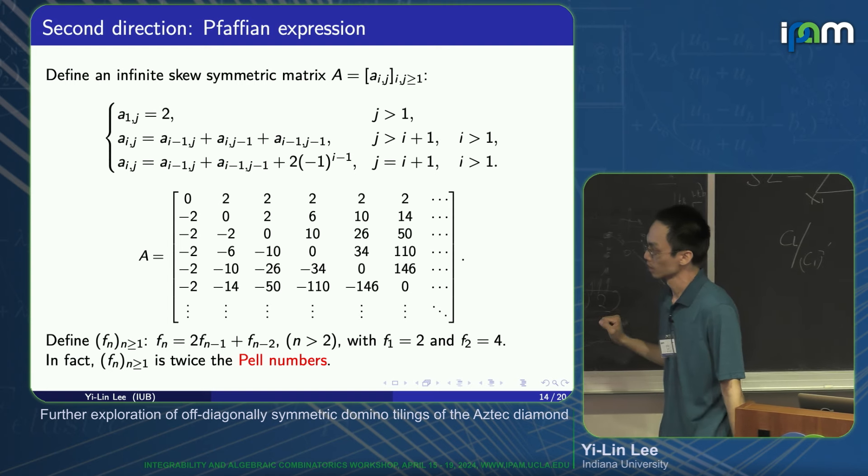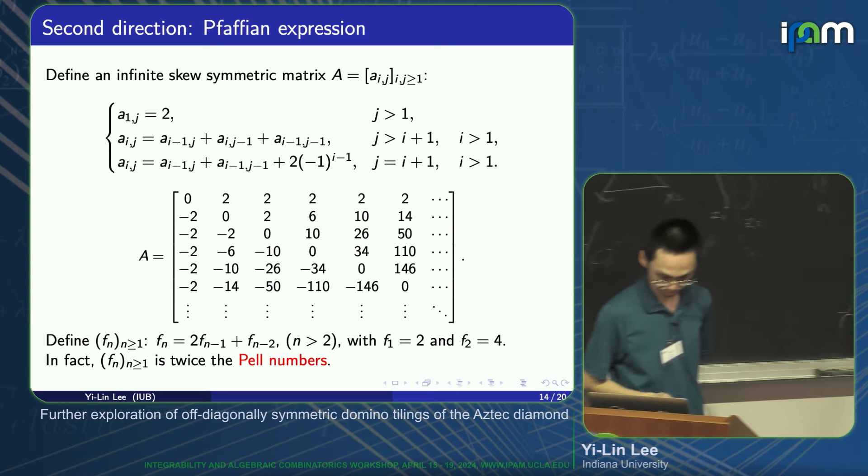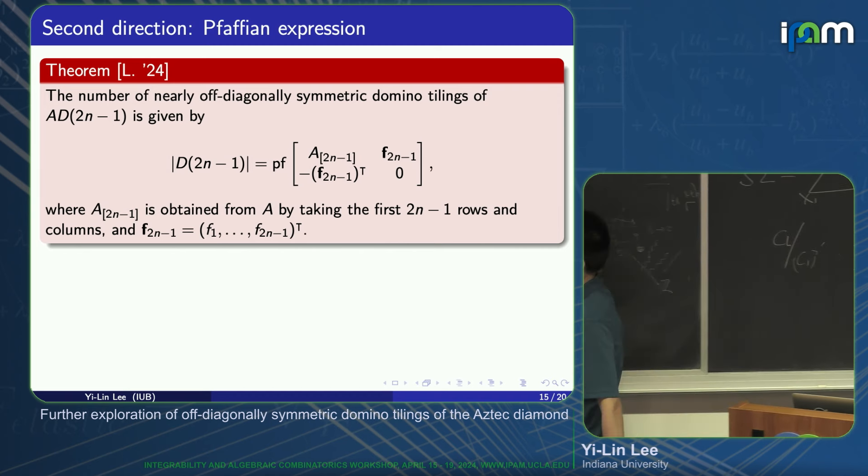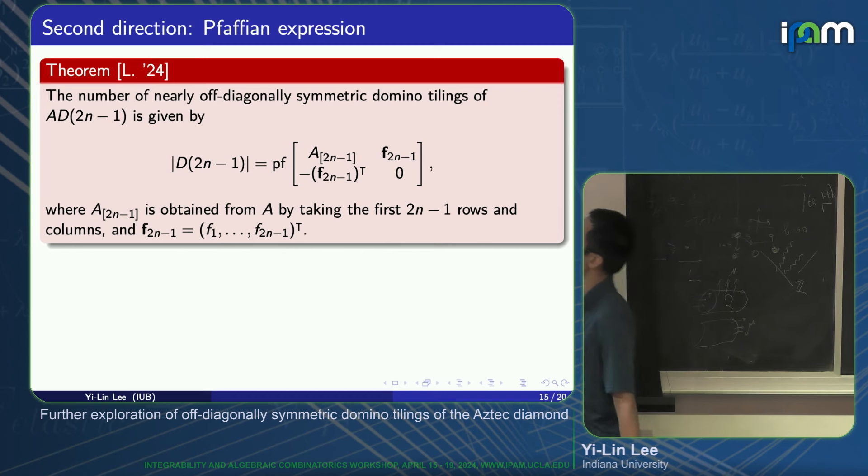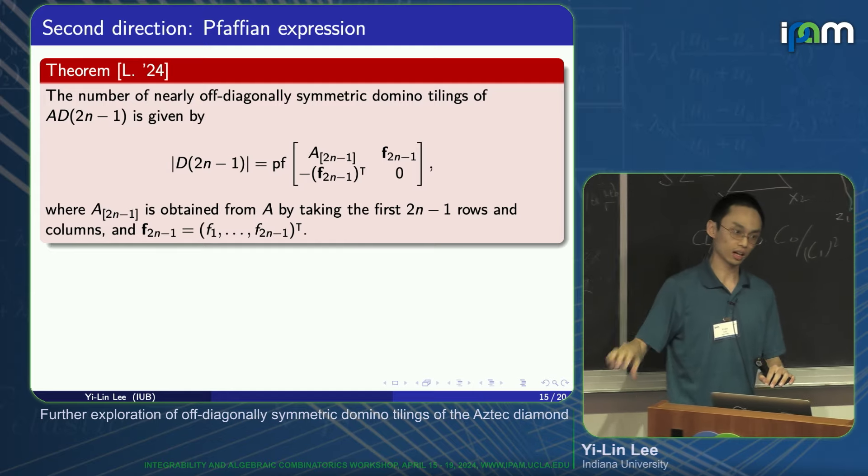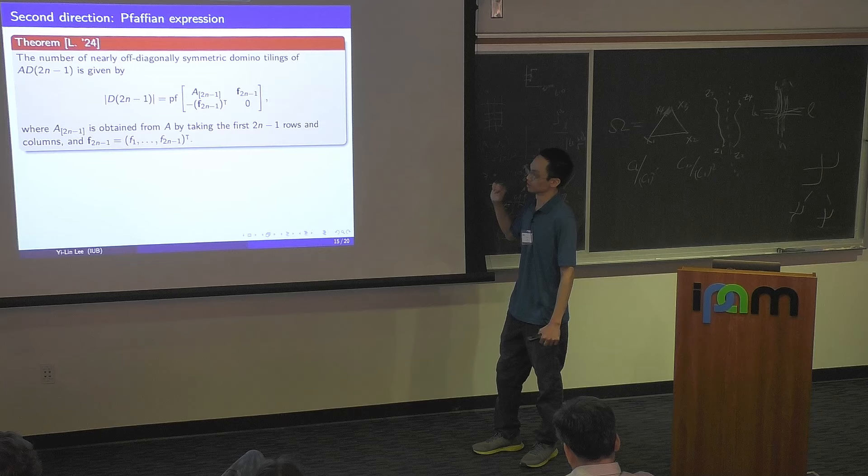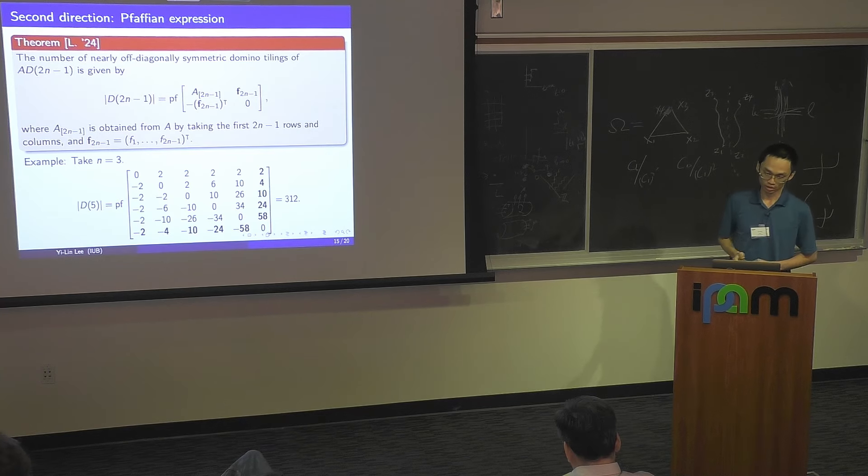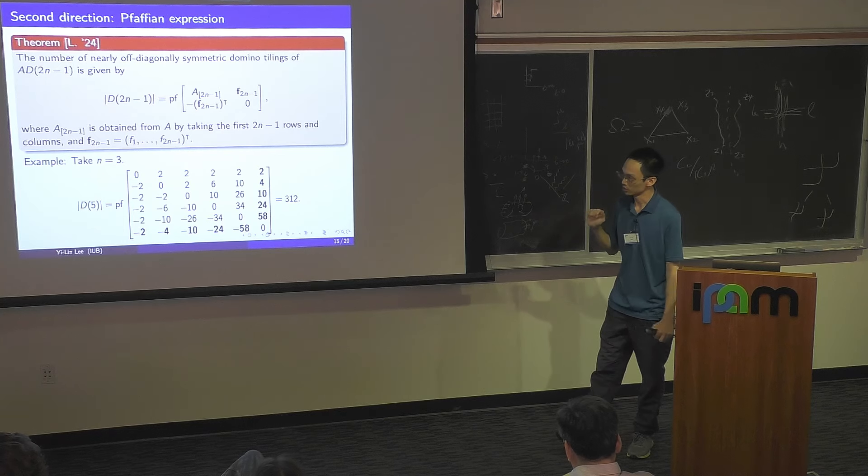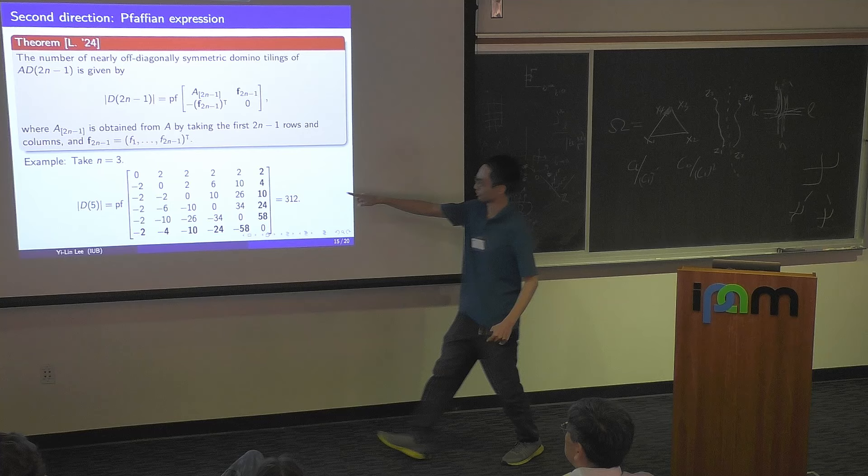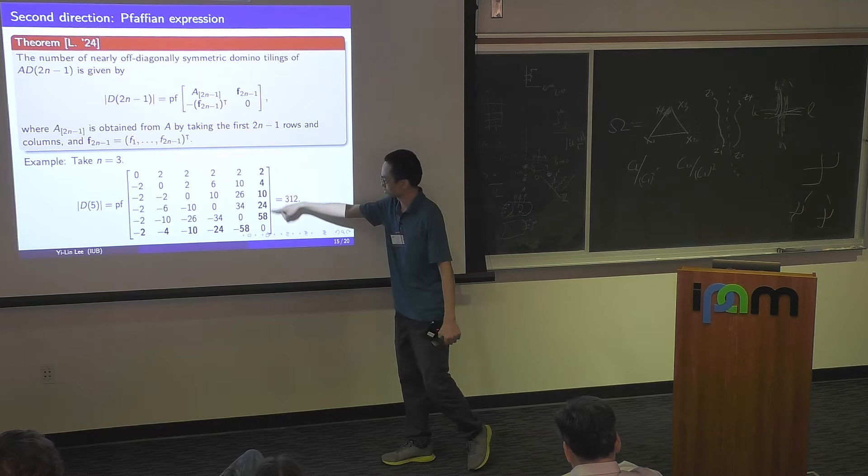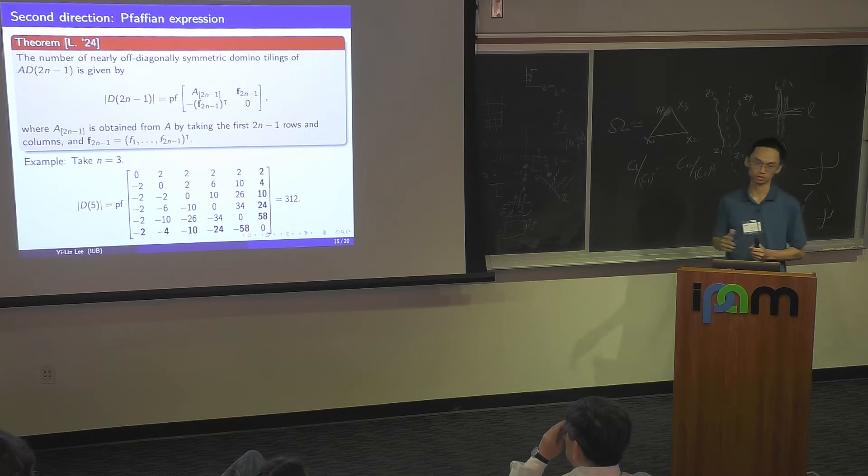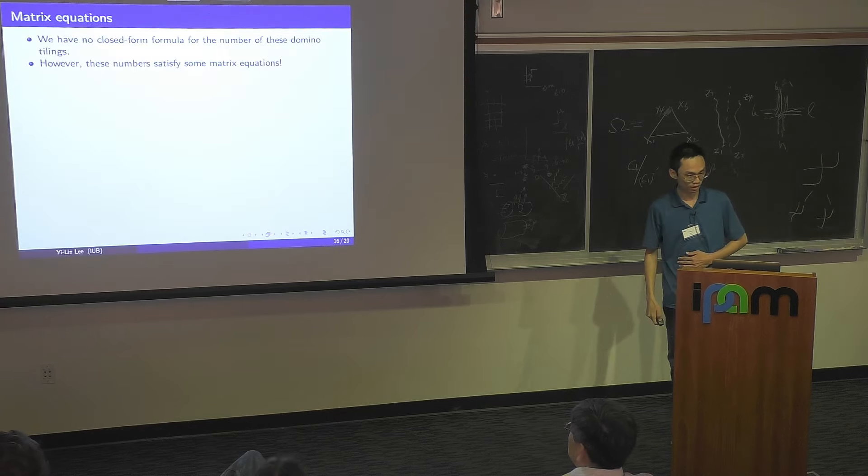We also need to define a sequence F_n. F_n equals 2 times F_{n-1} plus F_{n-2}, with the initial value 2 and 4. Basically, this is twice the Pell numbers. The second result is that the number of nearly off-diagonal symmetry domino tilings is given by the Pfaffian of this matrix, where A_{2n-1} means you just take the first 2n minus 1 rows and columns of the matrix A. And F is the column vector. You take the first 2n minus 1 terms of the sequence F_n and just put them together. This is an example for when n equals 3, so that's the Aztec diamond of order 5. This 5 by 5 skew-symmetric matrix comes from A, and the last column and last row comes from twice the Pell numbers, the first 5 terms. If you compute the Pfaffian, that gives you the number of tilings.